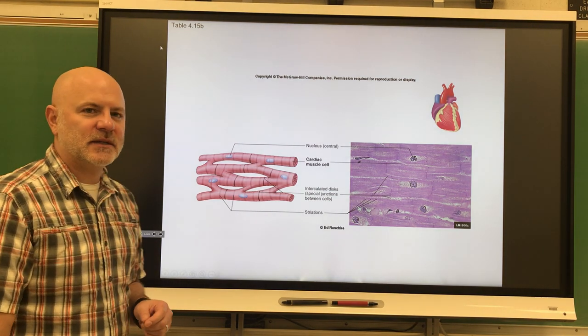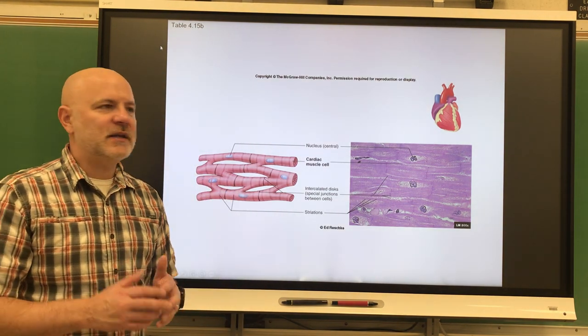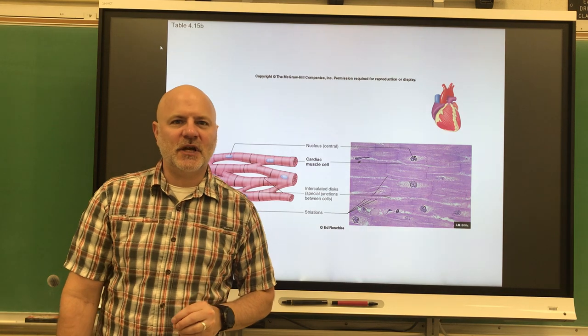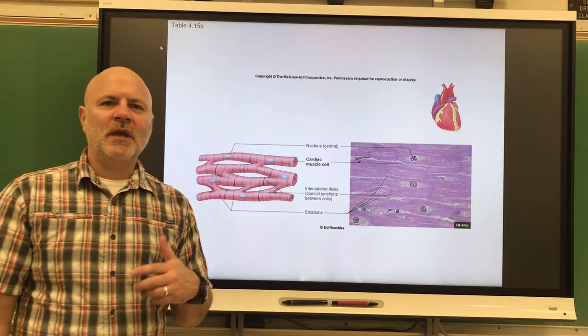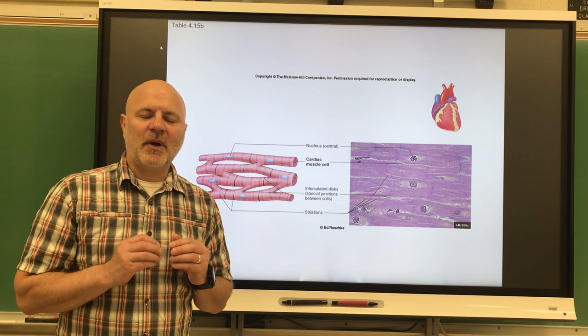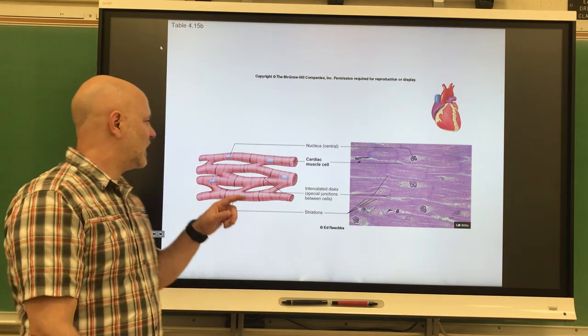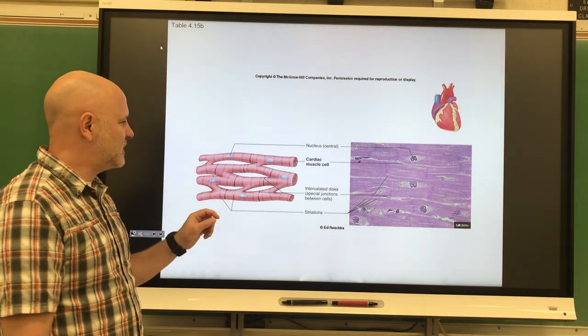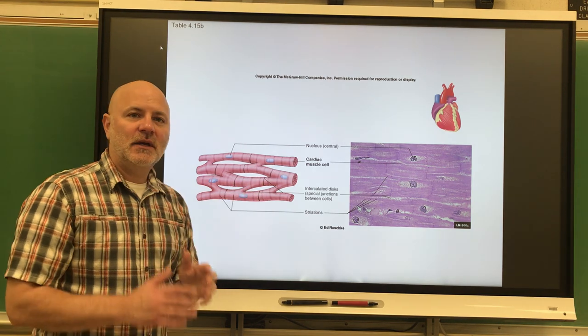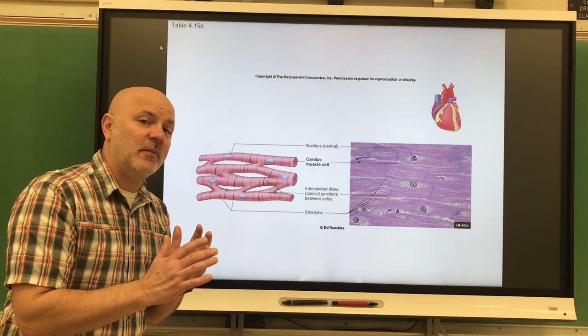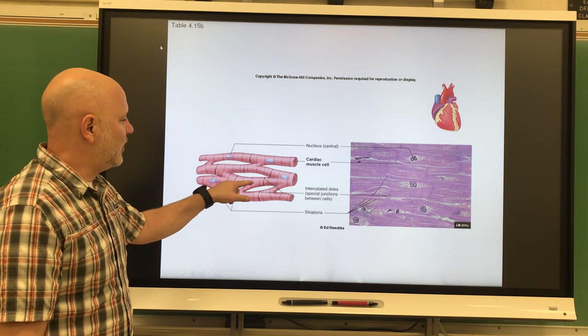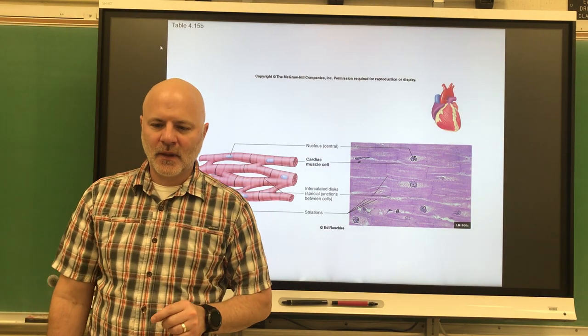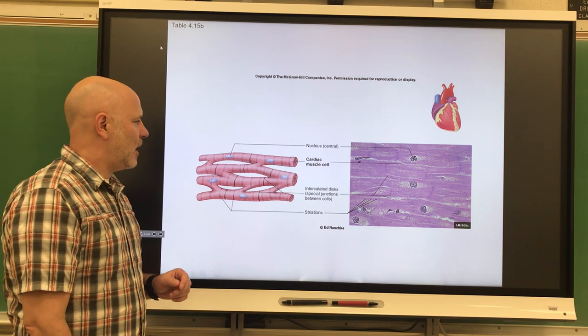Regardless of those situations, my heart will beat intrinsically 60 up to 100 times a minute on its own. Cardiac muscle has these structures called intercalated discs. We see those here and here and here. These are specialized regions of connections between the cardiac cells. They contain desmosomes and gap junctions. By containing gap junctions, gap junctions allow a nerve impulse or in this case an action potential to go from one cardiac muscle cell to the next.